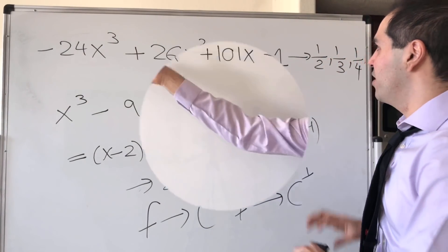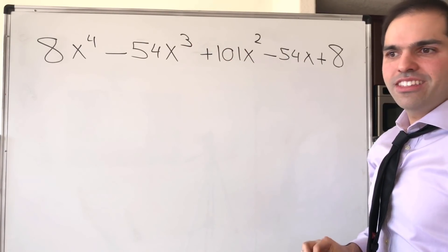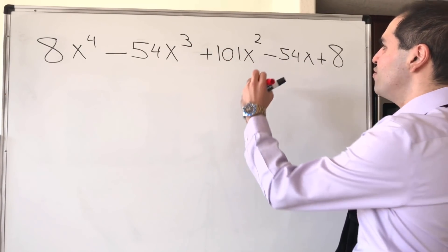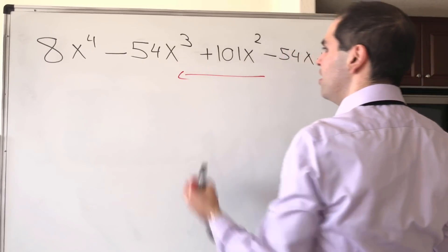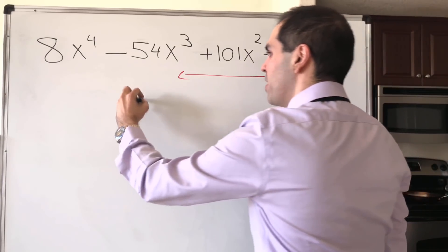For example, consider the following one: 8x to the 4th minus 54x cubed, etc, etc. Notice, if you reverse this polynomial, you actually get the same one, and those are called palindromic polynomials.